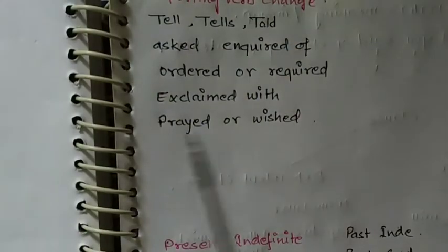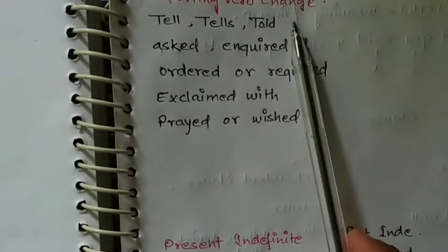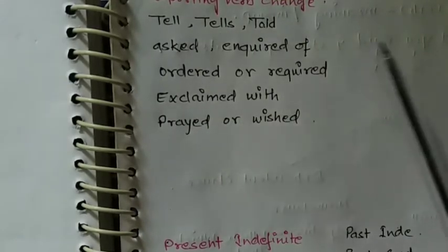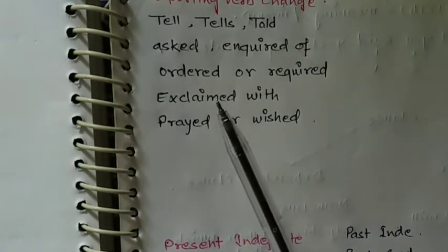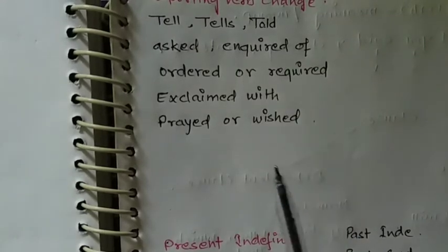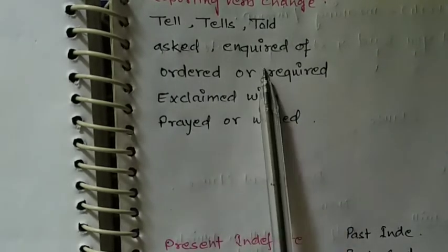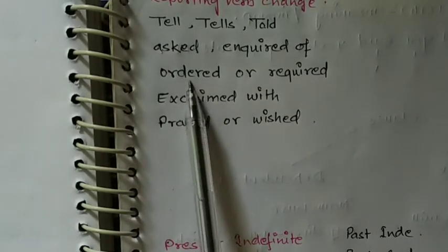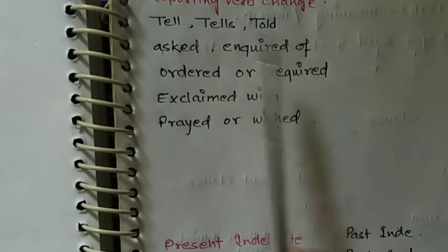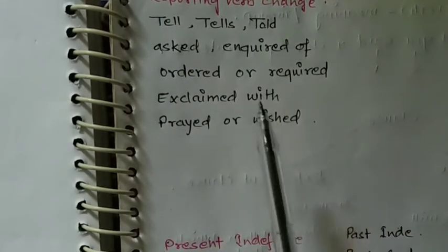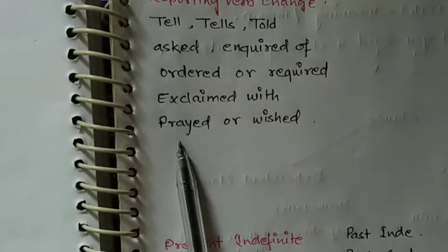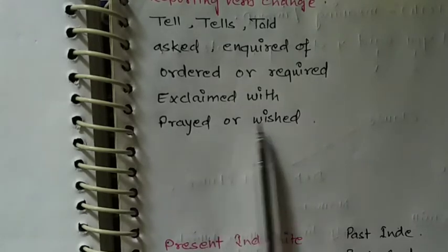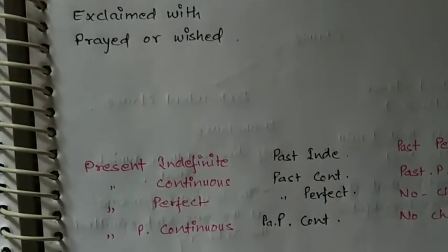Now here are the reporting verb changes. In simple sentences you will use 'tell', 'tells', or 'told'. In interrogative sentences the reporting verb change will be 'asked' or 'inquired'. In imperative sentences you will use 'ordered' or 'requested'. In exclamatory sentences we will use 'exclaimed with'. In optative sentences we will use 'prayed' or 'wished'. You must write down all these charts.